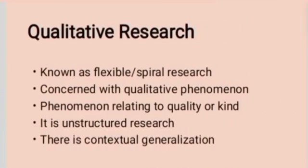The next important type is Qualitative Research, which is known as flexible or spiral research. As the name suggests, it is more concerned with the quality of a certain phenomenon or data. It dives into the 'why' alongside the 'what.' Qualitative data is concerned with qualitative phenomena and data relating to quality or kind. Qualitative research is an unstructured research with no contextual generalization.